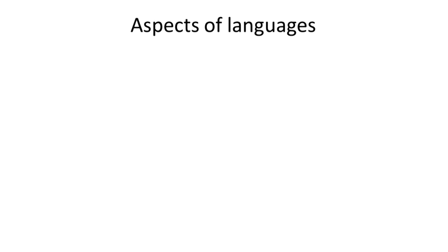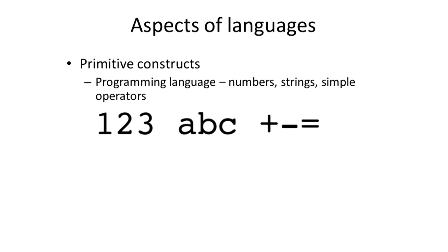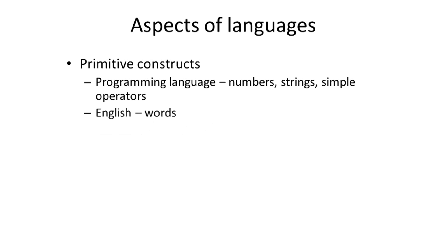When we talk about languages, we'll start by describing what are the primitive constructs — the elements out of which we put things together. In programming languages, those basic elements are things like numbers, strings or sequences of characters, and simple operators. In a natural language like English, the equivalent is words. What are the words of the programming language? What are the basic units that we put together?